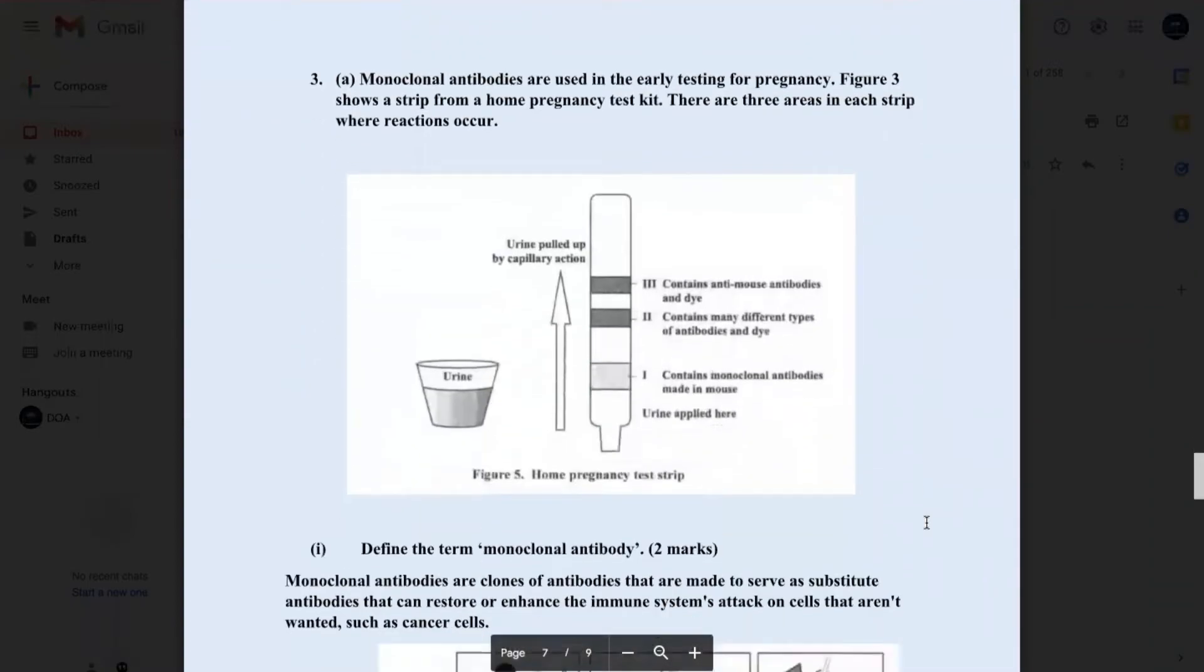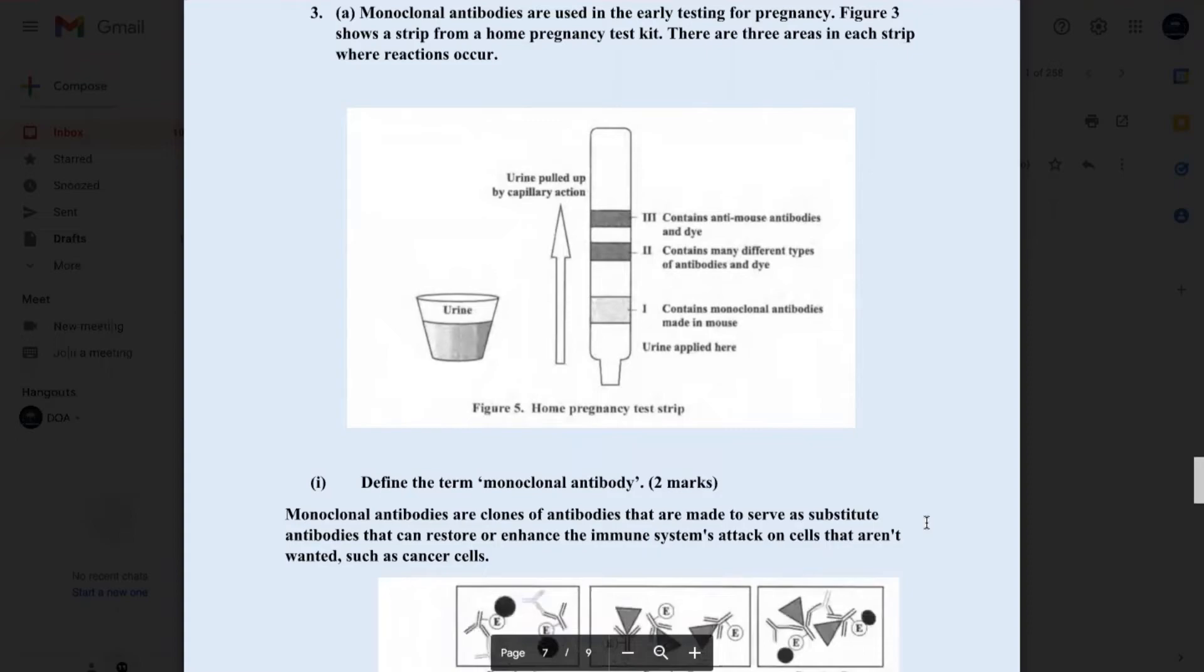Moving on to Module 3, Applications of Biology. Number 3A, monoclonal antibodies are used in the early testing for pregnancy. Figure 3 shows a strip from a home pregnancy test kit. There are three areas in each strip where reactions occur. Take a minute to examine this home pregnancy test strip. We're seeing a urine sample and three areas. And the first part says, define the term monoclonal antibody. Monoclonal antibodies are clones of antibodies, as the name suggests. They are made to serve as substitute antibodies that can restore or enhance the immune system's attack on cells that aren't wanted.